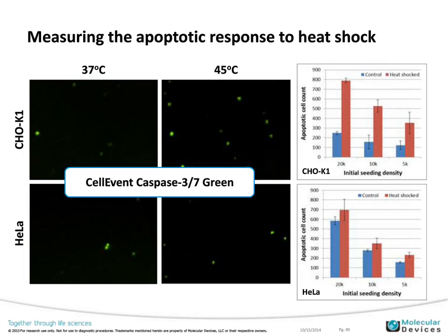To investigate the mechanisms of cell death more deeply, we looked at the apoptotic response using an assay for caspase 3 and 7 — an enzyme induced as part of the apoptotic cell death pathway. This green fluorescent assay labels each apoptotic cell in the population. CHO cells are on top and GELA cells on the bottom, with control and 45°C heat shocked cells. The imaging software identifies green-expressing cells and counts them. There is a dramatic increase in apoptotic cell count in the CHO cells and an almost insignificant increase in GELA cells, providing interesting insights into which pathways are being activated in response to heat shock.